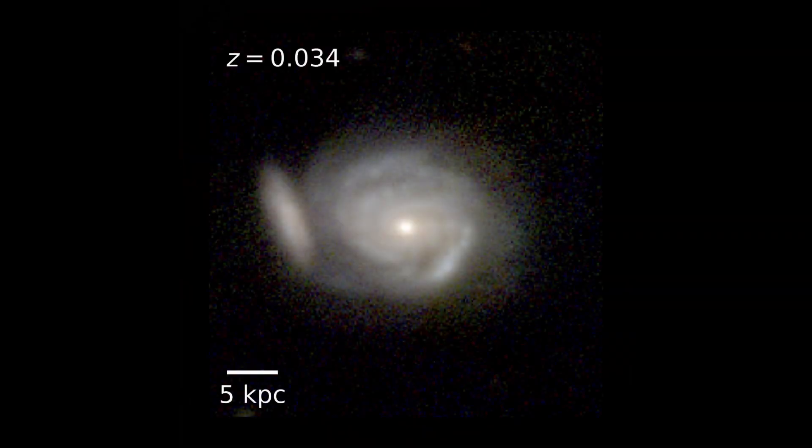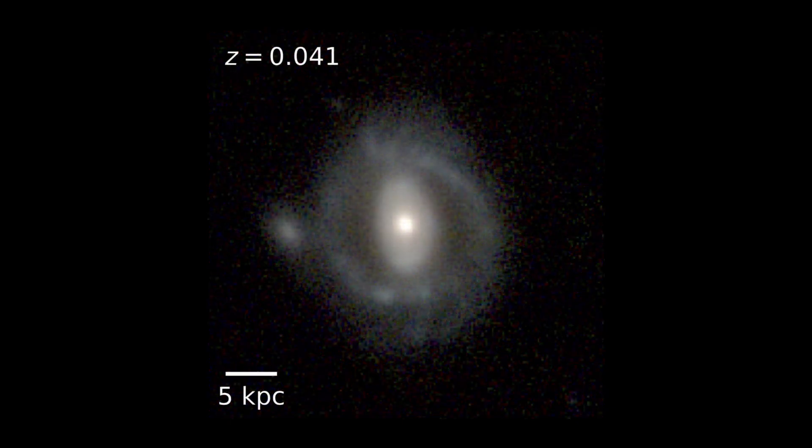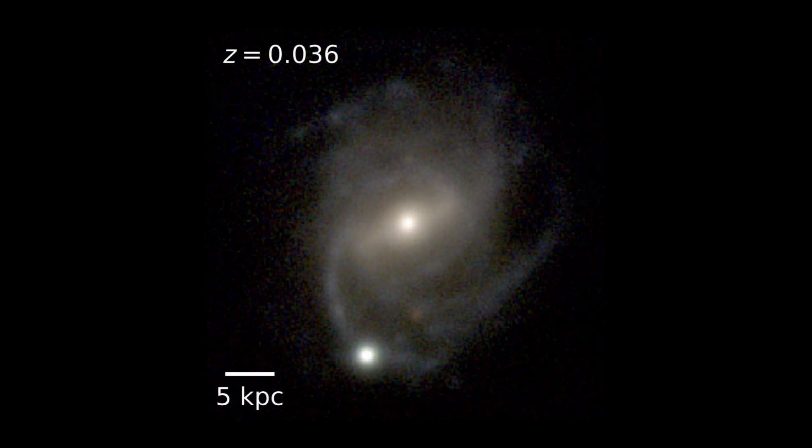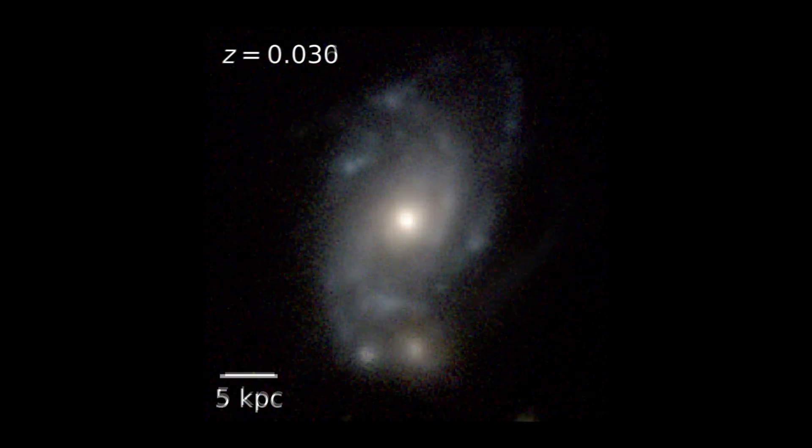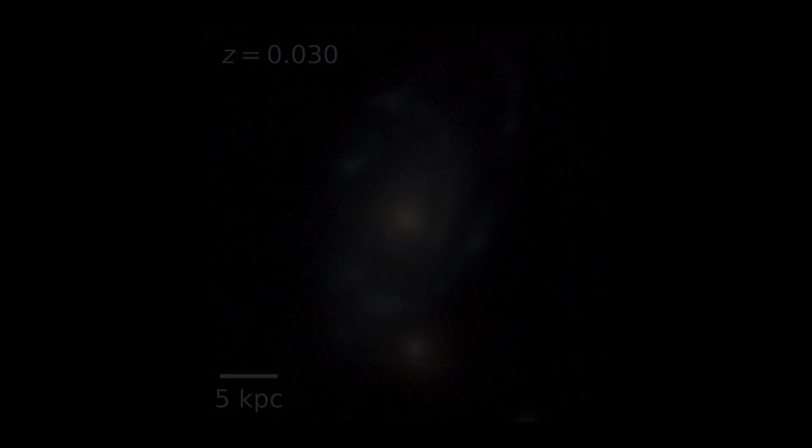Utilizing data from the PanSTARRS-1 3Pi-Steradian survey, they meticulously examined the structural and photometric properties of nearly 11,500 active galactic nuclei (AGNs) in the nearby universe, each possessing a redshift of less than or equal to 0.35.